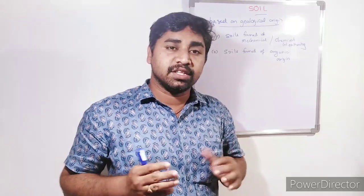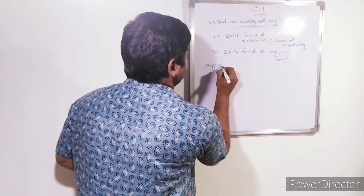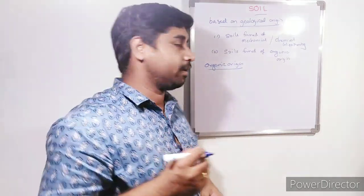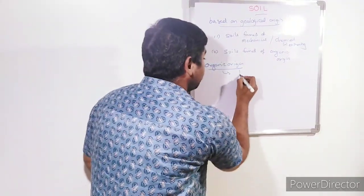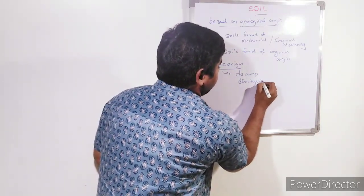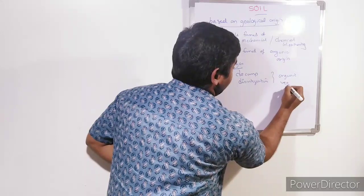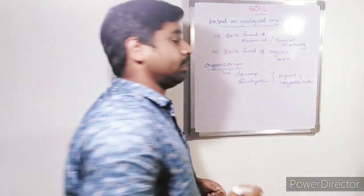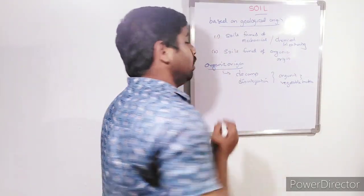In soil classification there is another category — organic soils, or soils of organic origin. Here, soils are formed out of decomposition and disintegration of organic and vegetable matter. This organic and vegetable matter undergoes decomposition and leads to the formation of organic soils.